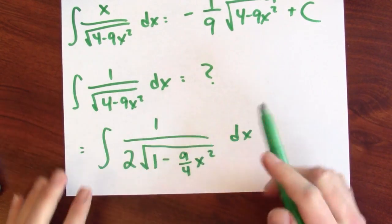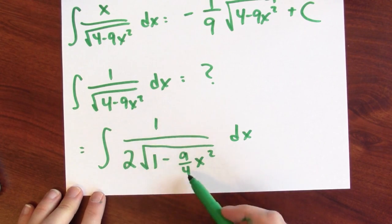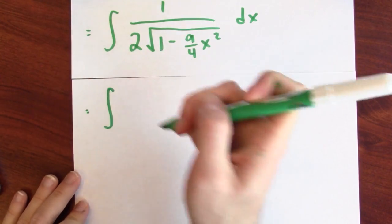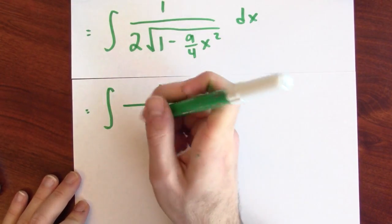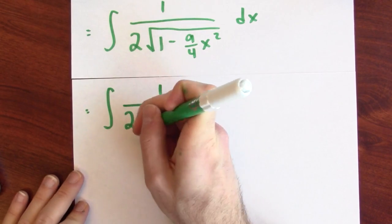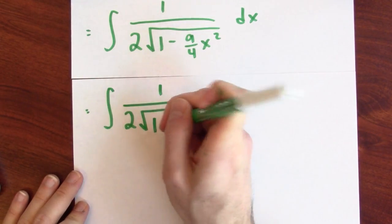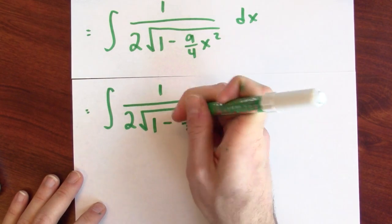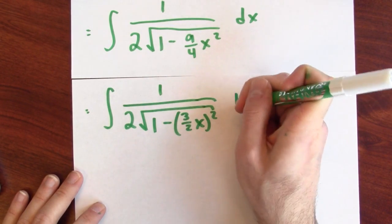And you might be wondering, why is there a 2 on the outside and a 4 on the inside because the square root of 4 is 2. My plan here is to make the denominator look like the square root of 1 minus something squared. We write this integral again as 1 over 2 the square root of 1 minus. And instead of 9 quarters x squared, I'll write it as 3 halves x squared dx.